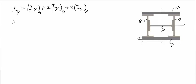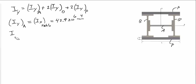The moment of inertia with respect to the Y axis of wide flange A is the same as the moment of inertia with respect to the X axis in the table, which is 42.9 × 10⁶ mm⁴.